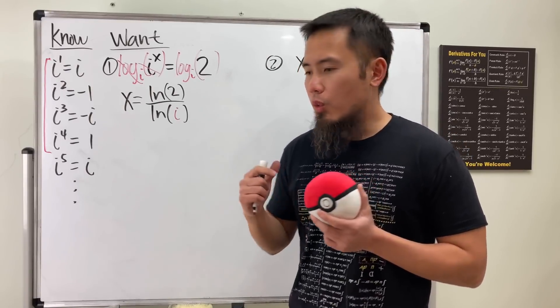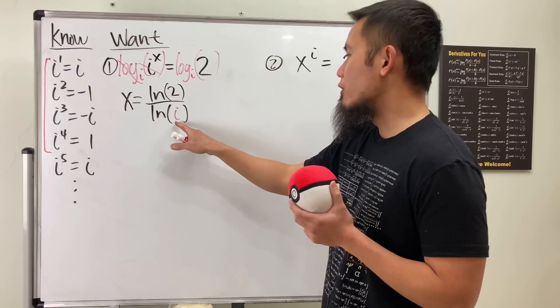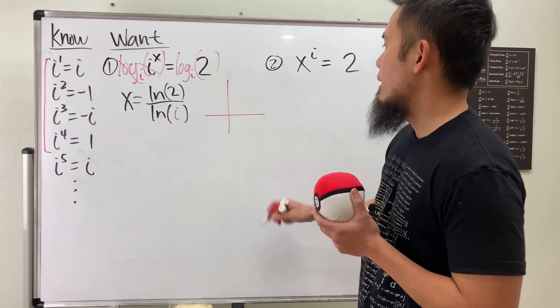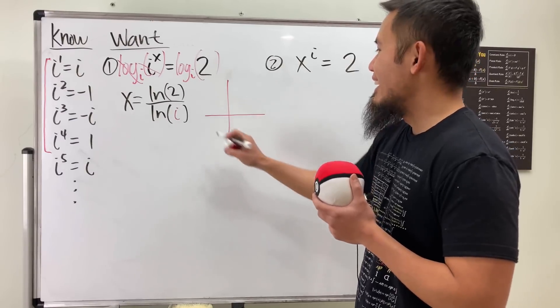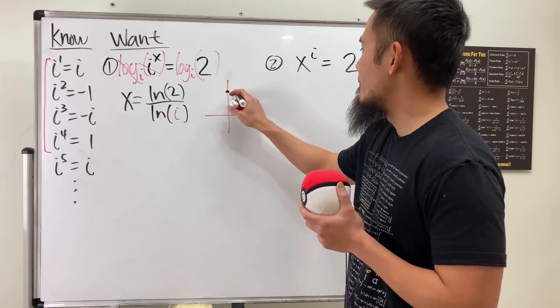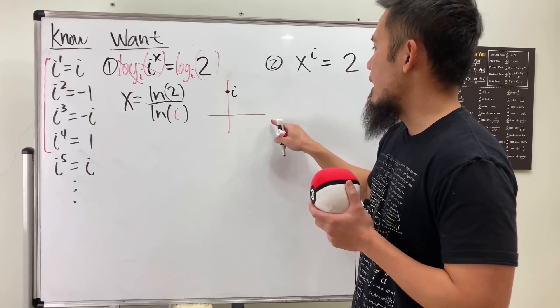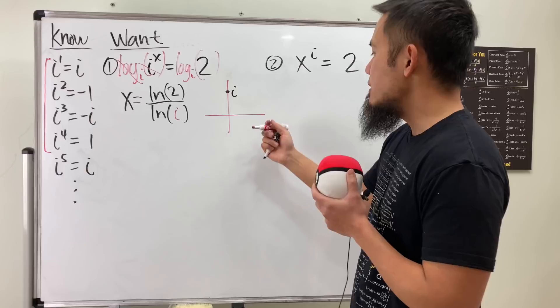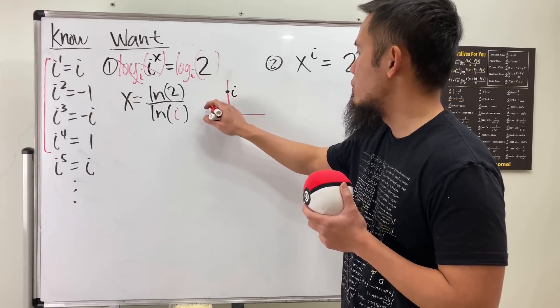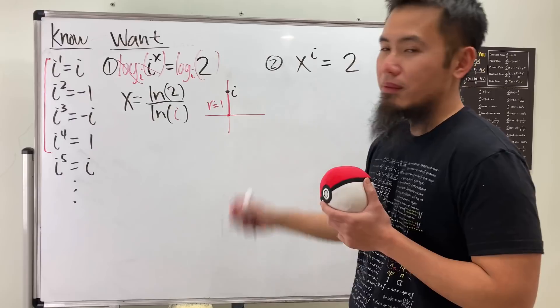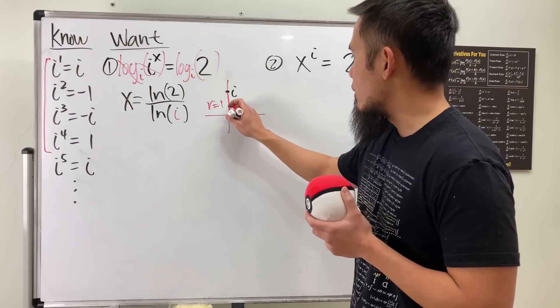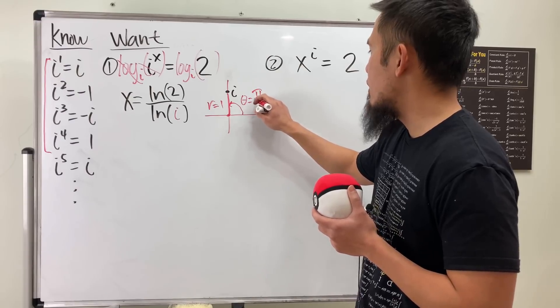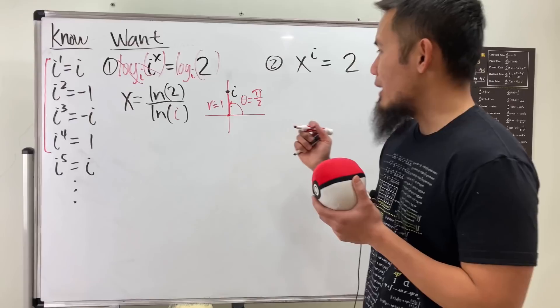Here it becomes ln(2) divided by ln(i). Now the question is, what exactly is the ln(i)? Well, to take care of this, we will have to look at the polar form of the i. Let's first look at the complex plane. And the i is right here. This is the real axis, and this is the imaginary axis. And now we need two things. The first thing is the distance from the origin to here, which is just going to be 1 unit. And the other thing is the angle, which is just going to be 90 degrees. But we are all adults now, so let's use π over 2.